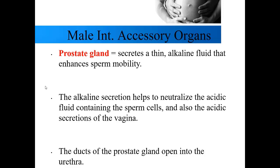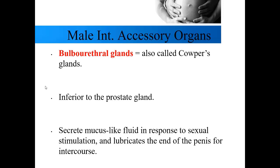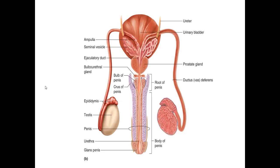The ducts of the prostate gland open into the urethra. Also called Cowper's glands, the bulbourethral glands lie just inferior to the prostate and secrete a mucus-like substance when the male is aroused, lubricating the end of the penis in anticipation of sex. Here is a posterior view of the bladder showing the ureters, seminal vesicles, prostate, penis, and testes. Secretions of the seminal vesicle meet with those of the prostate gland and are ejaculated out of the penis.